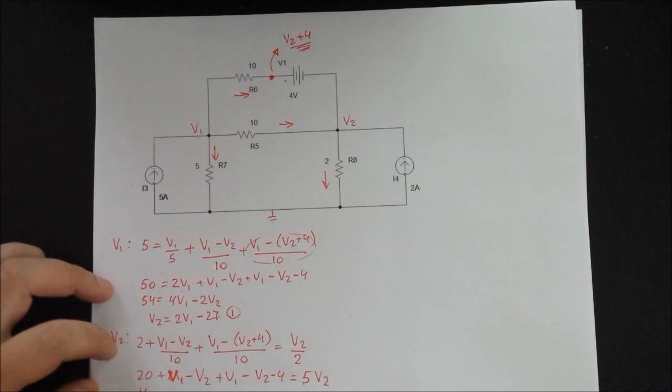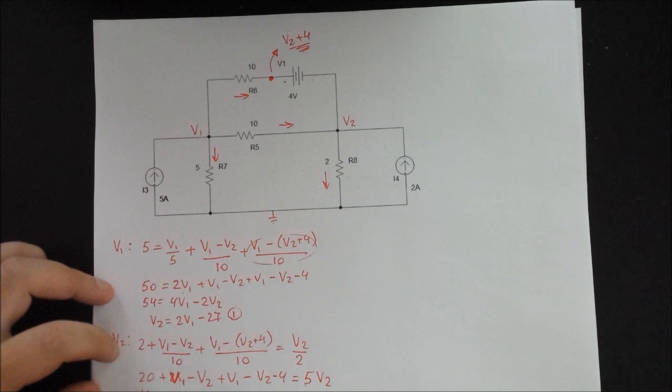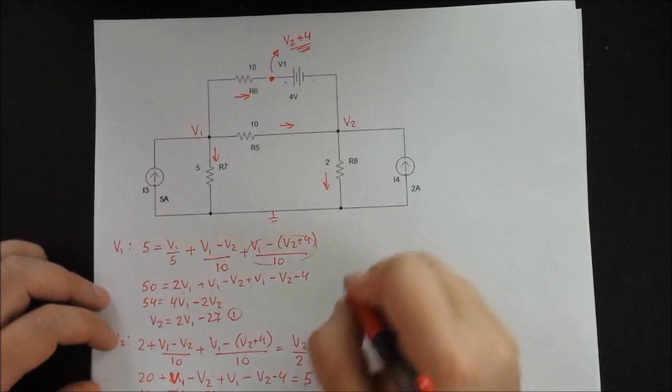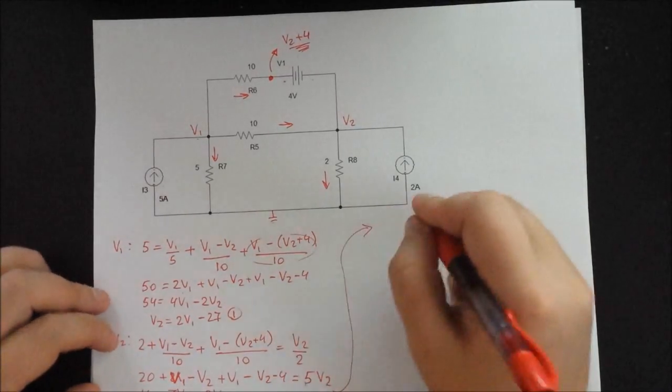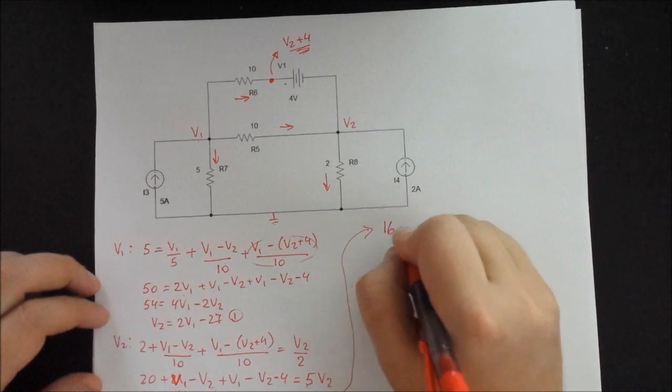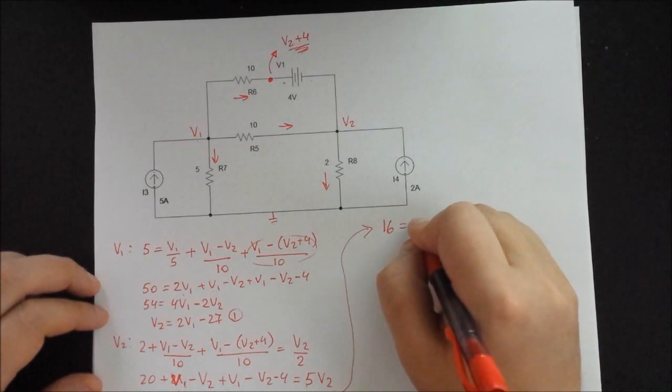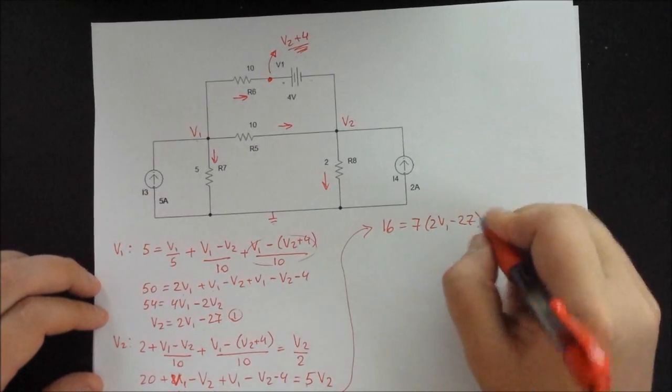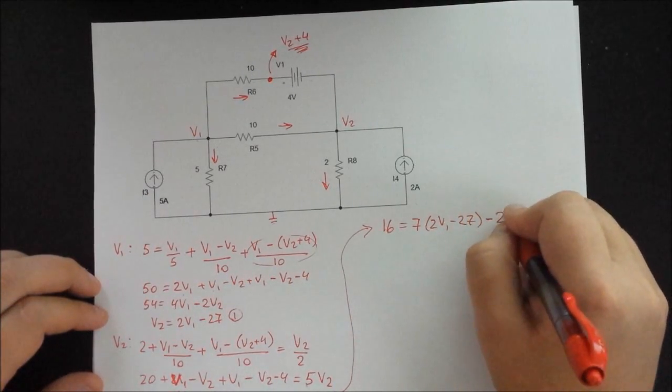And we're going to solve for the numbers. So that's 16. And that's equal to 5, 6, 7, 7V2. And we're going to put V. So it's minus 2V1. And we're going to substitute the V2 into this equation. So that gives us 16. It's equal to 7, 2V1 minus 27. Minus 2V1.